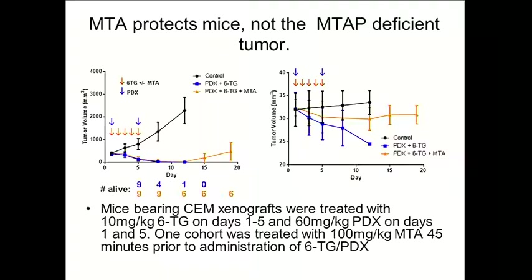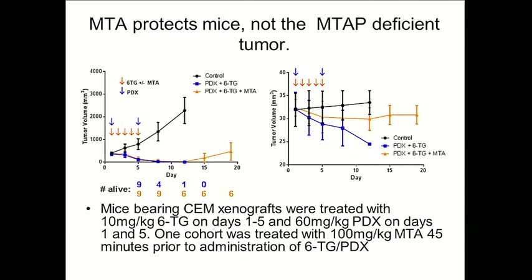In another experiment, we tested the two drugs together — 6-thioguanine plus or minus methylthioadenosine, combined with pralatrexate. Giving 6-thioguanine for 5 doses with pralatrexate for 2 doses, much like our proposed clinical study, the combination is lethal without methylthioadenosine. With methylthioadenosine pretreatment, we get very nice tumor regression. Looking at animal weights, the animals treated with the two drugs pre-treated with methylthioadenosine tolerated the treatment very well without any marked weight loss.